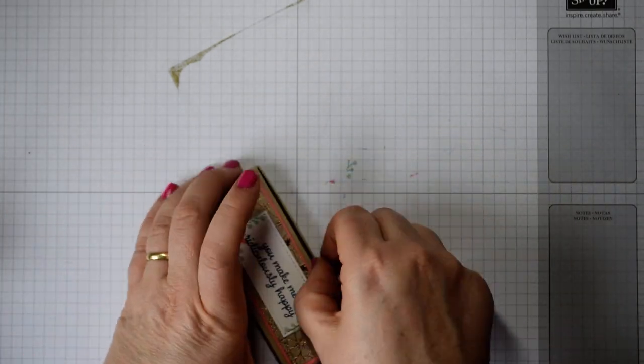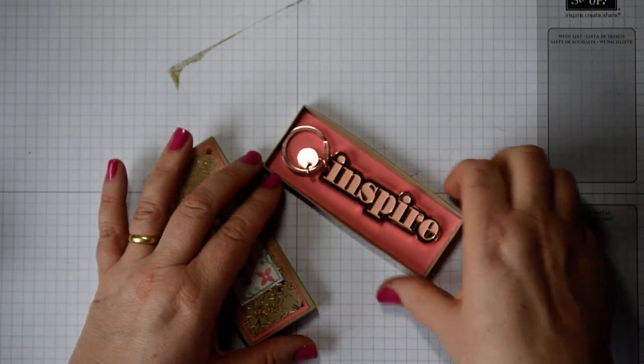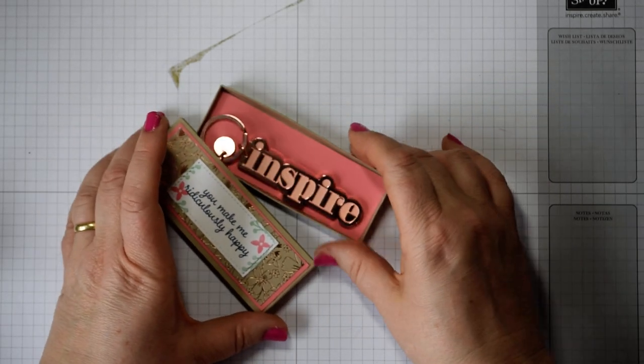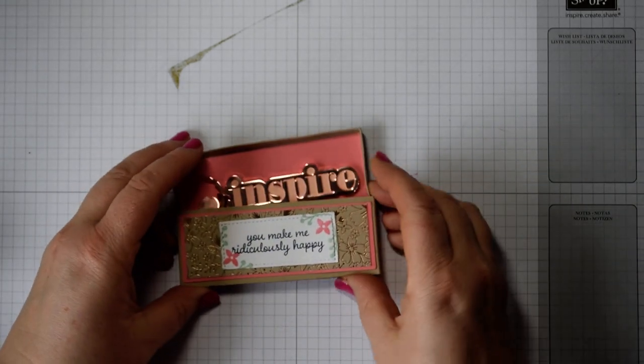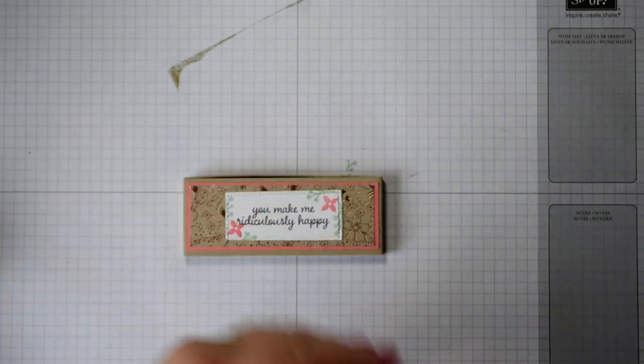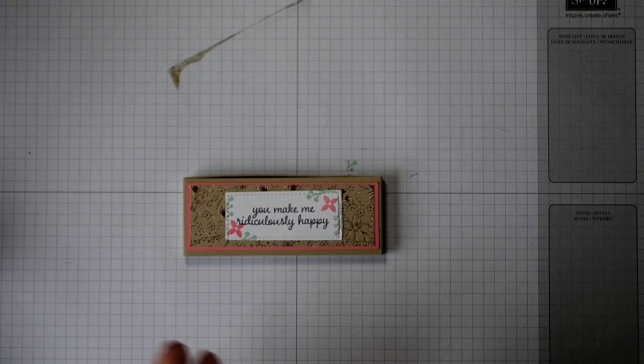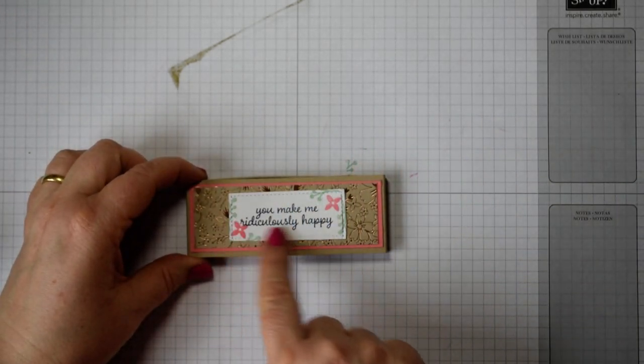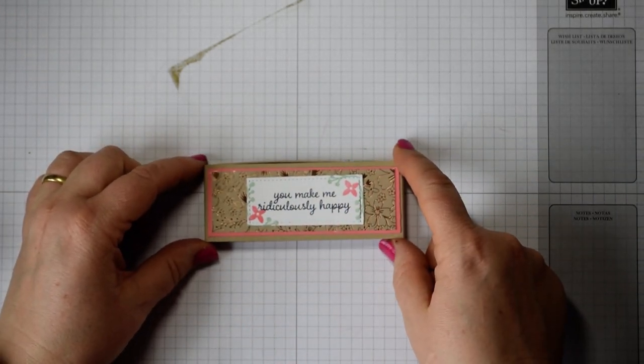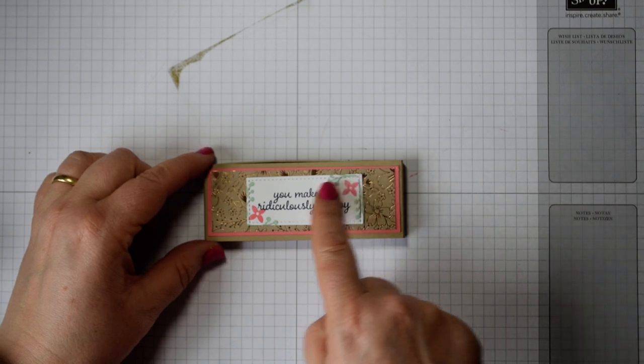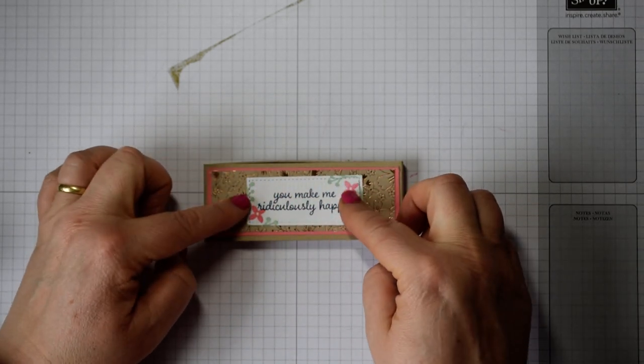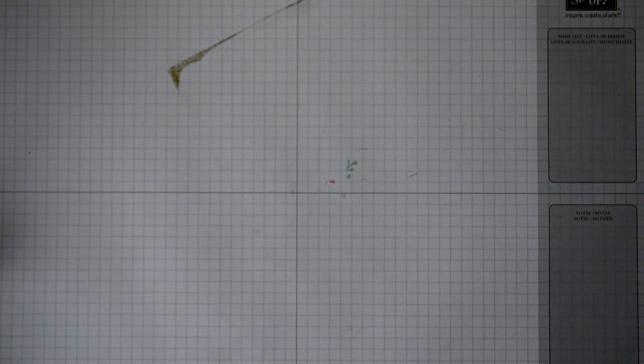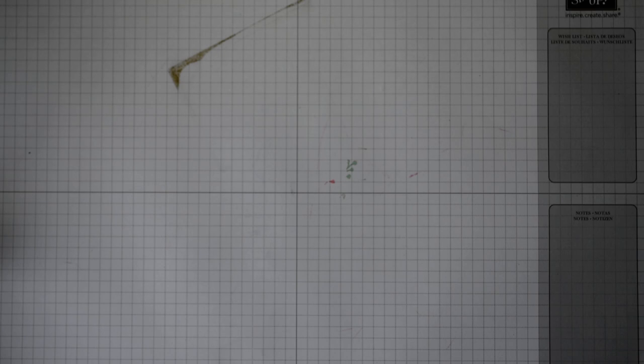This is the box, an envelope punch board box which I've lined with a little bit of Flirty Flamingo to bring out that pink. These are Zoella keyrings which I got a little while ago. On the front here, you'll notice I haven't seen those rectangular stitched framelits. I'll explain to you how I go about doing the stitched framelits so you get a different shape. So without further ado, let's get on with making our box.